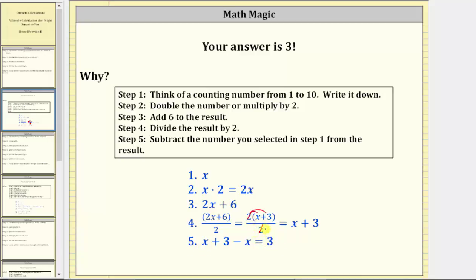One more thing we might notice is that x can be any real number, and the result of these calculations will always be three. So in step one, we were told to select a counting number from one to ten, but we could also select any real number, and the answer will still always be three.